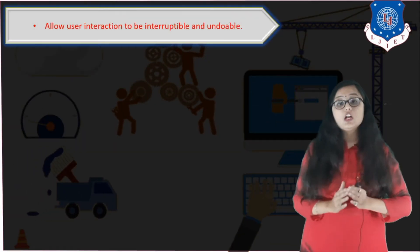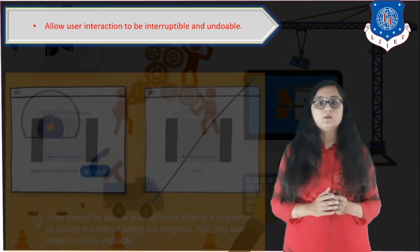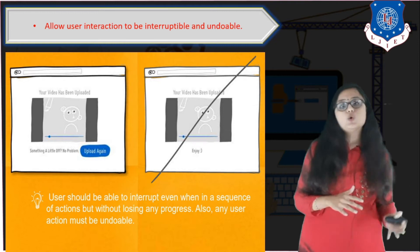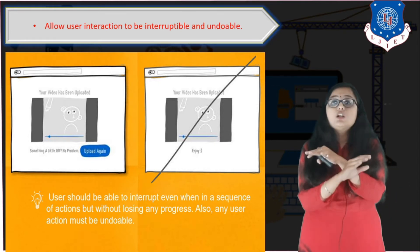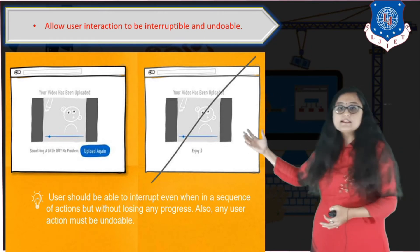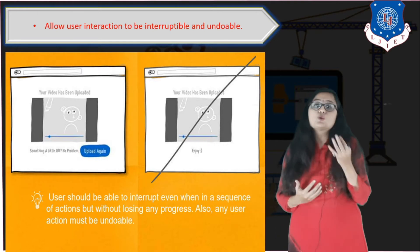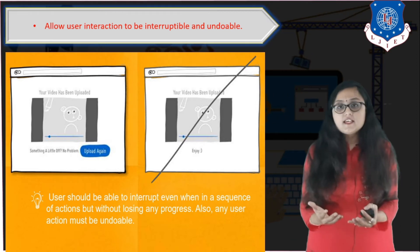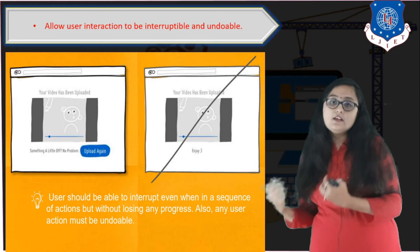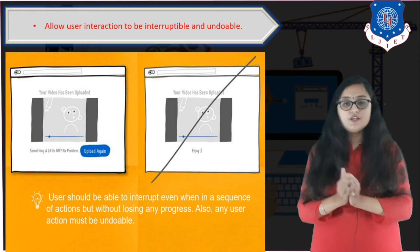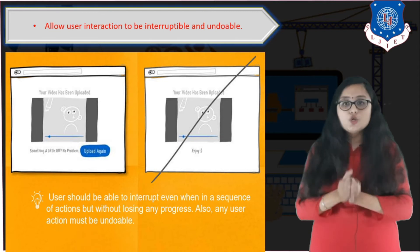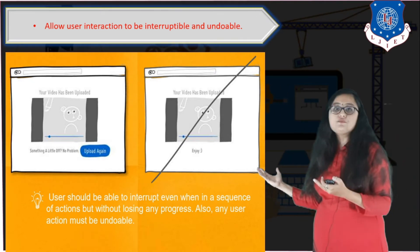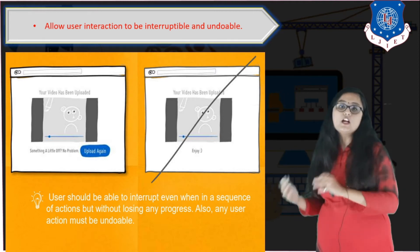The next point is to allow user interaction to be interruptible and undoable. Once a user has performed some action, they should be able to undo it. If you force the user to do something that cannot be undone, the user may get frustrated. For example, if the user is drawing or processing something and is not allowed to undo an error, they will get frustrated. You should make the user interface such that the user can interrupt and undo the previous action at any point.